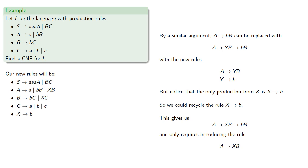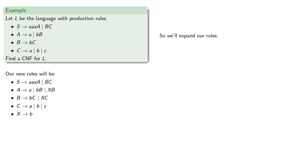Now, it's worth noting that we could have introduced a new variable if we wanted. So we'll expand our rules to include these. Then we can eliminate the productions A produces bB, and B produces BC.